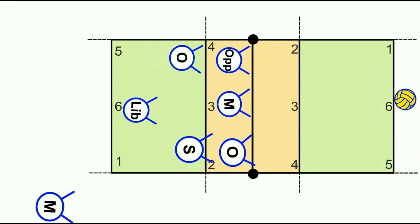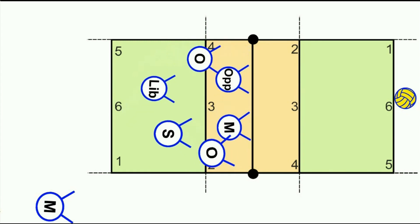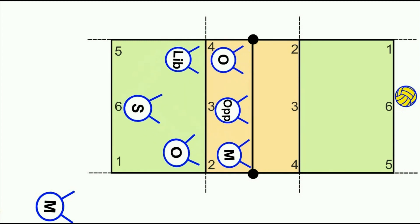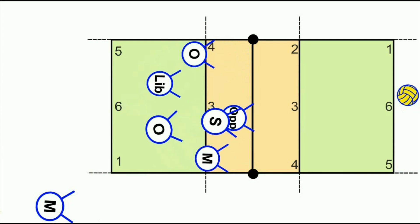We rotate again — now the setter is in deep six, which is not ideal for serve-receive. We bring the setter through to the front just behind the opposite player and pull the other two frontcourt players back as well. We can leave it with three or four serve-receivers — the four-receiver option has two players taking long balls and two taking short balls. We can bring the position-four player back to just have three receivers, whatever option works for the team.